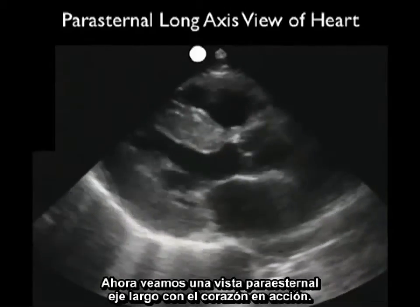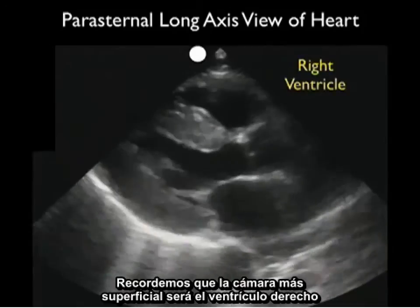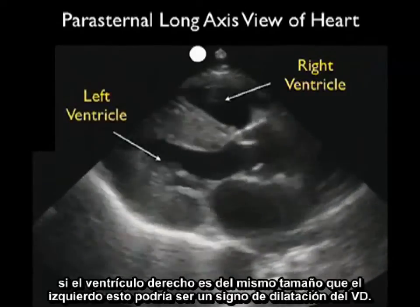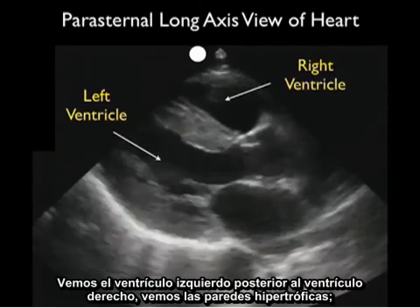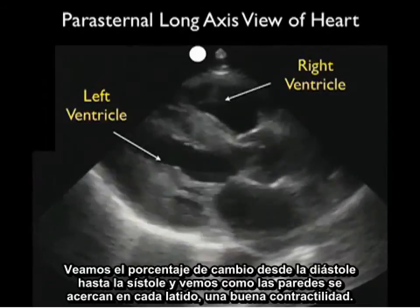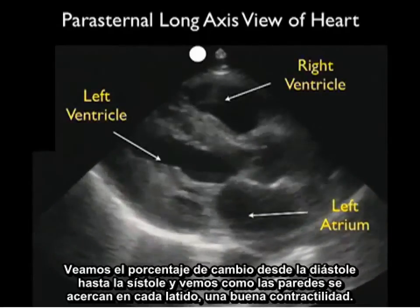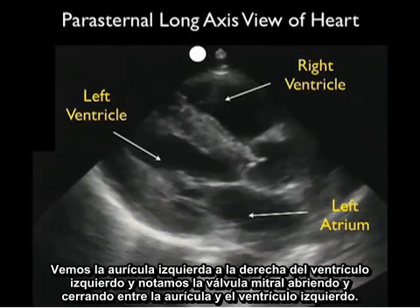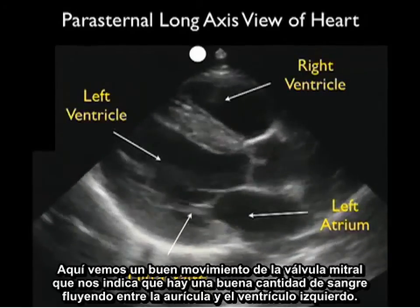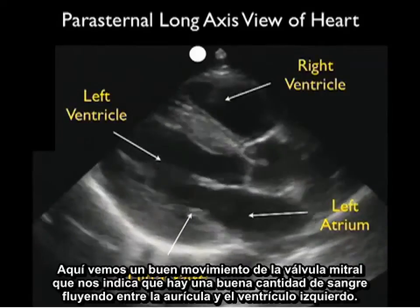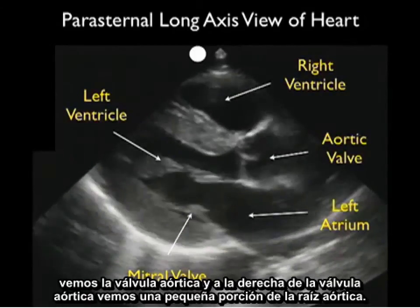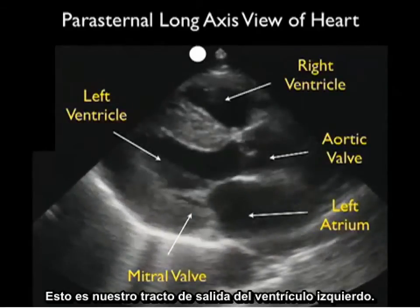Now let's take a look at the parasternal long axis view of the heart in action. Remember that the most superficial chamber will be the right ventricle, and the normal dimensions of the right ventricle are that it should be about half the size of the left ventricle. If the right ventricle is the same size as the left ventricle, that could be a sign of RV strain. We see the left ventricle posterior to the right ventricle — note its hypertrophic walls; this patient actually had long-standing hypertension. Looking at the percentage change from diastole through systole, we see that the walls come in well with each heartbeat, indicating good contractility. We see the left atrium to the right of the left ventricle, and notice the mitral valve flipping up and down in between the left atrium and the left ventricle, indicating a good amount of blood flowing between the two chambers. Just above the left atrium and to the right of the left ventricle, we see the aortic valve, and just to the right of the aortic valve, a little bit of the diamond-shaped aortic root — this will be our left ventricular outflow tract.